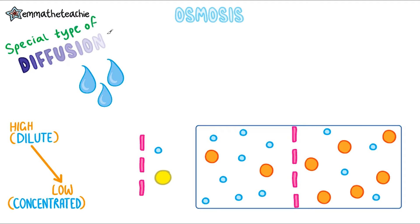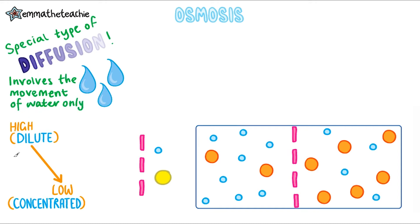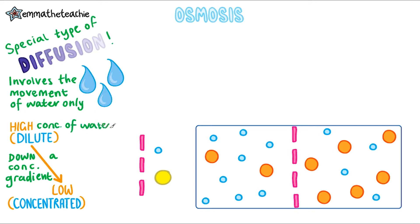Osmosis is a special type of diffusion because it involves the movement of water molecules only. And like diffusion, it still occurs down a concentration gradient, with the water moving from a dilute solution — one that has a high concentration of water molecules — to a more concentrated solution, one that has a lower concentration of water.